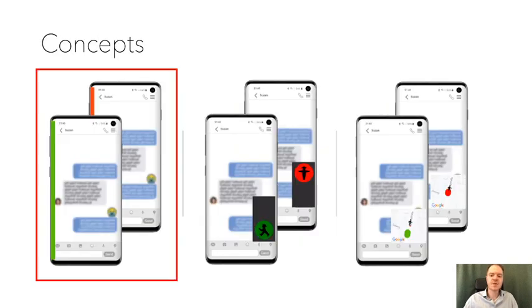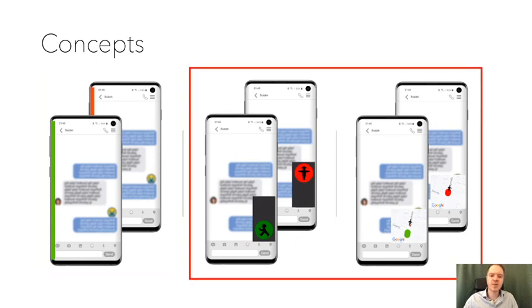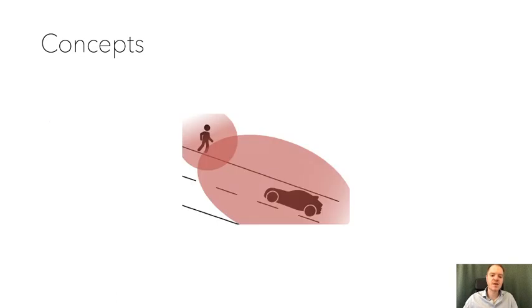These are the three design concepts we compared in the final study. Bars, which shows a colored bar at the direction left or right on the screen depending on where the vehicle is approaching from. Traffic light, which shows a traffic light icon and map, which shows a dynamic map of the environment with moving symbols for each entity, pedestrian and vehicle.